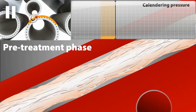In the pre-treatment phase, the web is heated and plasticized by the metal belt or the thermo roll. Optionally, both sides can be heated.